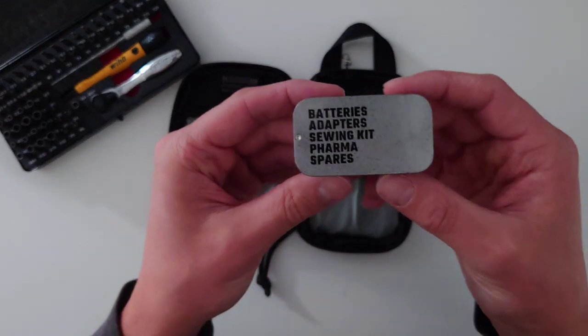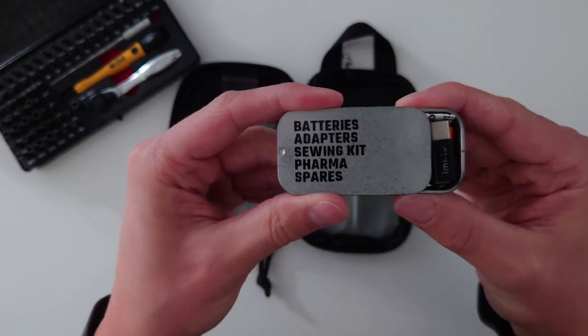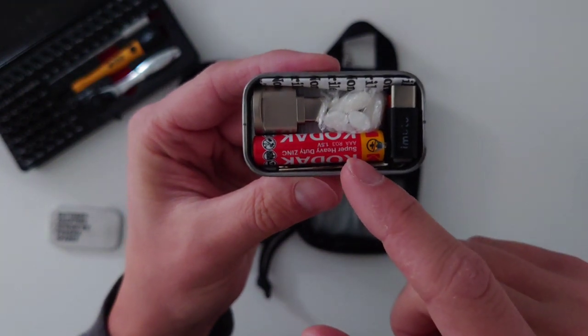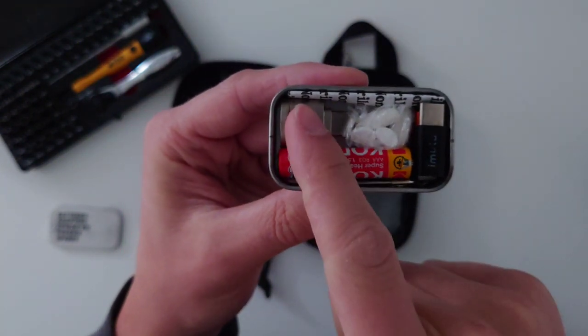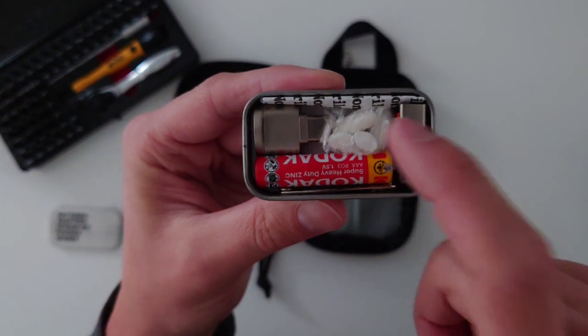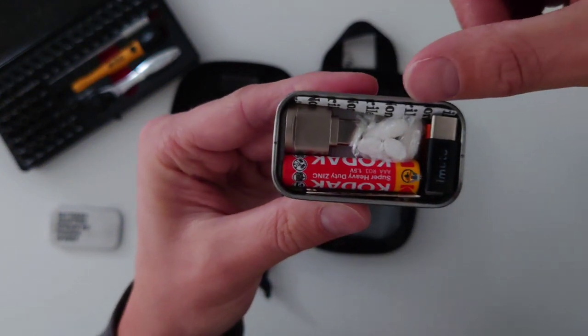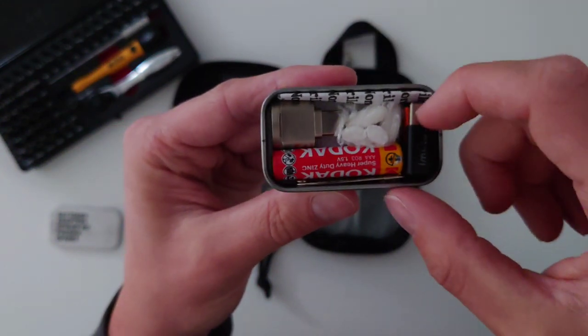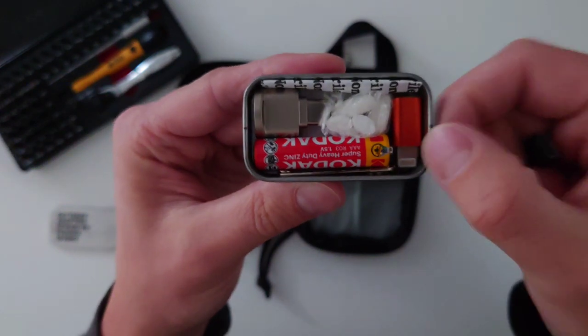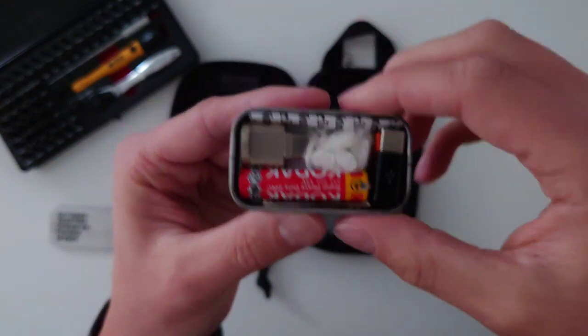I've then got a little tin of miscellaneous items. I've sort of just noted on here what's inside for my own personal use. Inside there, I've got a spare AAA battery, which is for a different torch. I've got a USB-C to microSD converter. I've got a few little pills, hay fever and ibuprofen. I've got a spare knife blade for my scalpel. And then I've got the USB-C converter and a lightning converter for use with my charger, which I'll show you in a second.